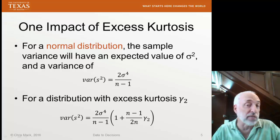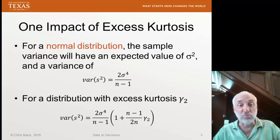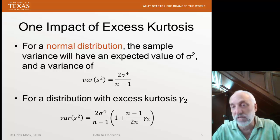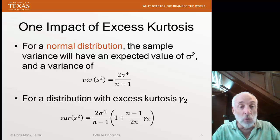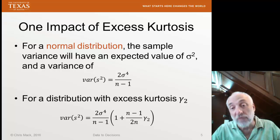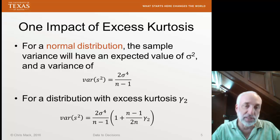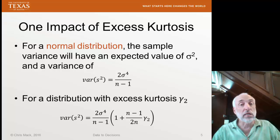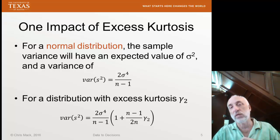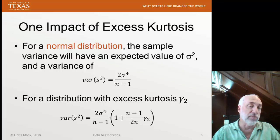If the excess kurtosis is positive, that is we have heavy tails, then our variance estimate has more uncertainty. If gamma 2 is 1, we have about 50% more uncertainty in the variance of the variance. If gamma 2, however, is negative, that means we have lighter tails. That means we have less uncertainty in our estimate of the variance. So it can be useful to understand what the excess kurtosis is just to get a better idea of how good our estimates of variance or standard deviation really are.